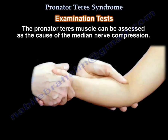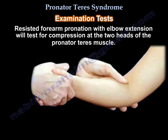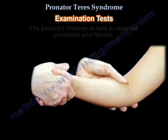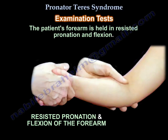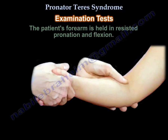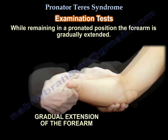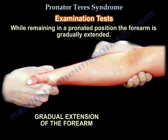Resisted forearm pronation with elbow extension will test for compression at the two heads of the pronator teres muscle. The patient's forearm is held in resisted pronation and flexion, and while remaining in a pronated position, the forearm is gradually extended.